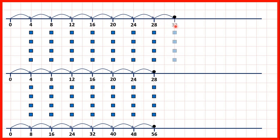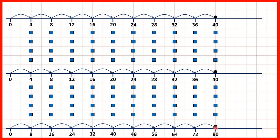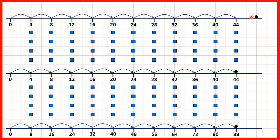Then we have 32, and if we show that twice, we get 64. Then 36, if we show that twice, we have 72, because 9 times 8 is 72. 10 times 4 is 40, which means that 10 times 8 is 80. 11 times 4 is 44, and 11 times 8 is 88. 12 times 4 is 48, and 12 times 8 is 96.